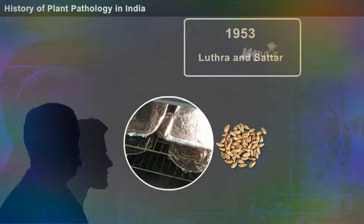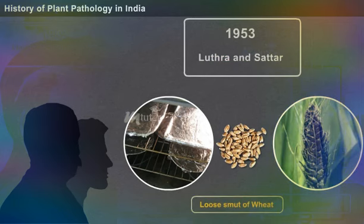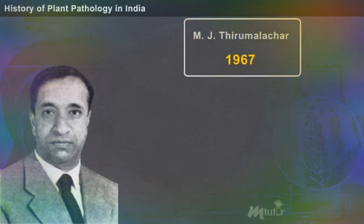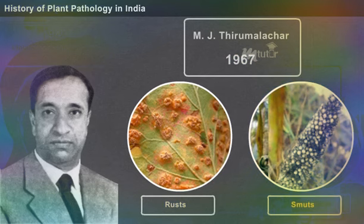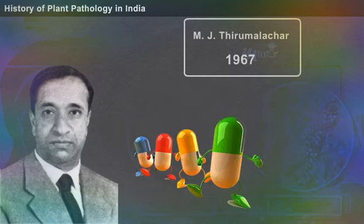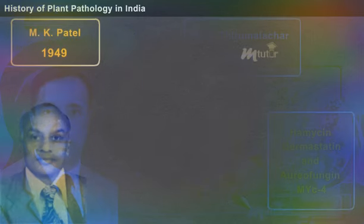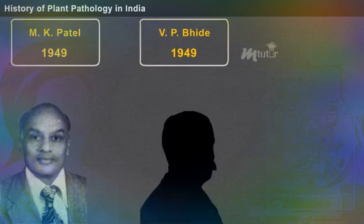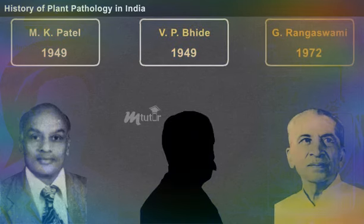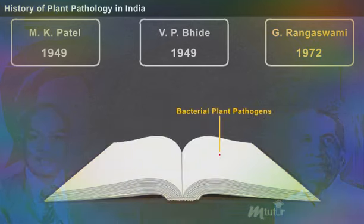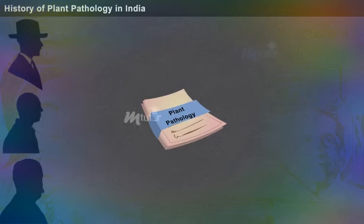In 1953, Luthra and Sattar developed the solar heat treatment of wheat seeds to control loose smut disease. M. J. Thirumalachar, in 1967, conducted exhaustive studies on rusts and smuts and developed a number of antibiotics — including hemicin, dermostatin, and oreofungin MYC4 — for controlling plant diseases in India. M. K. Patel (1949), V. P. Bhide (1949), and G. Rangaswamy (1972) made tremendous contributions to bacterial plant pathogens.